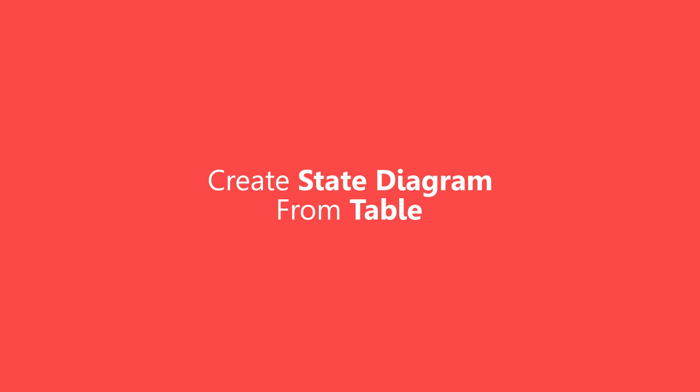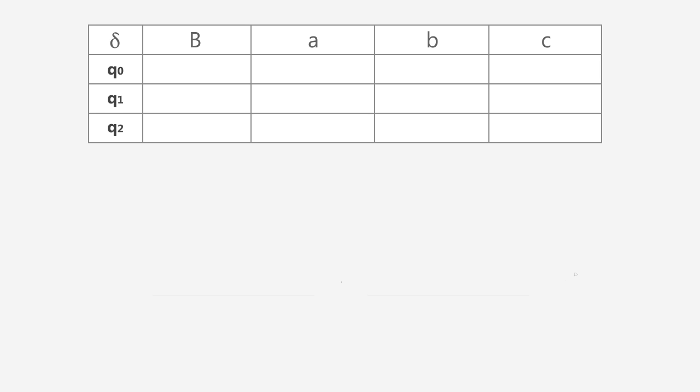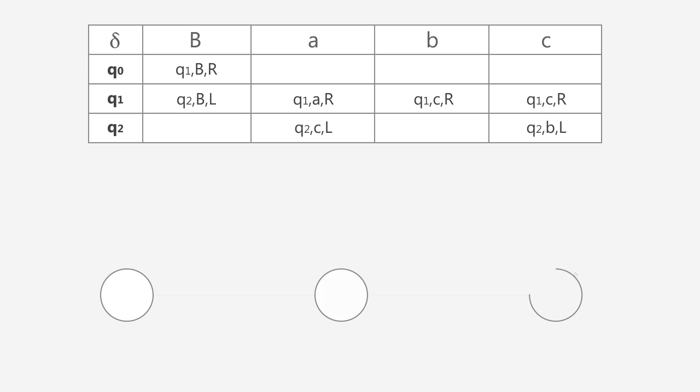Now let's try to create a state diagram from the transition table. We have a simple example that has a transition table with three transition states and four input strings. Note that the capital letter B means blank input. The first step is to create three transition states.